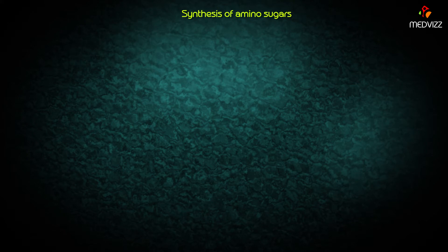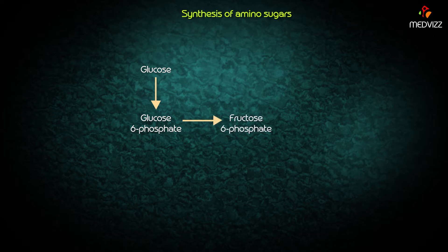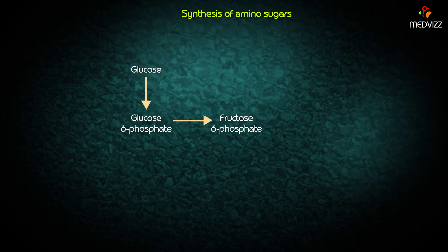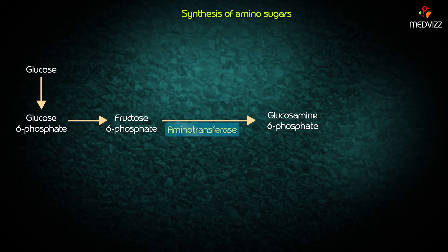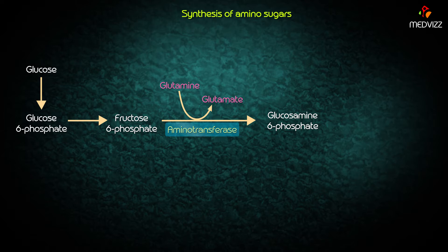All amino sugars are derived from glucose. Glucose is converted to glucose-6-phosphate, which is then isomerized to fructose-6-phosphate. Fructose-6-phosphate is converted to glucosamine-6-phosphate, catalyzed by the enzyme aminotransferase. The amino group is derived from the amide group of glutamine. This is an irreversible and rate-limiting step in the synthesis of amino sugars.